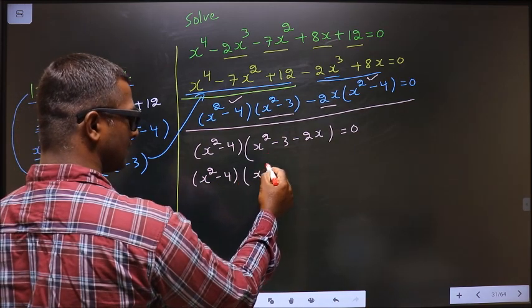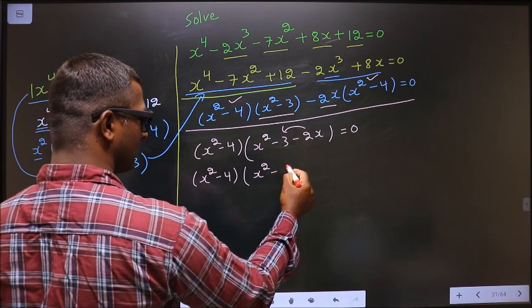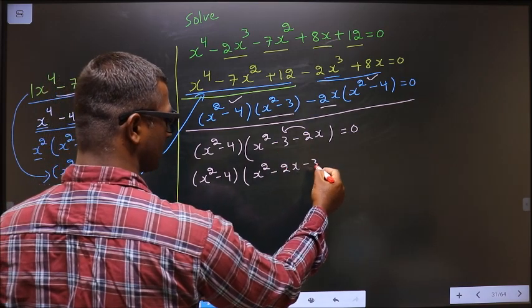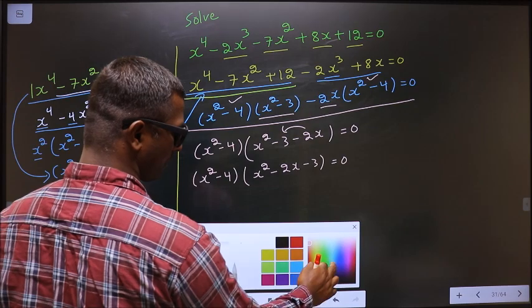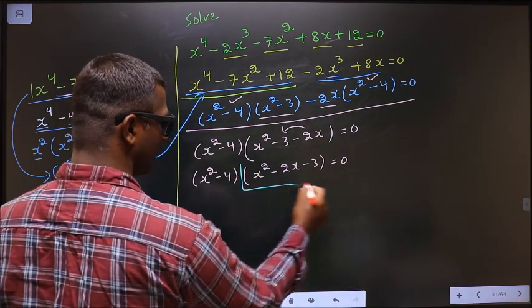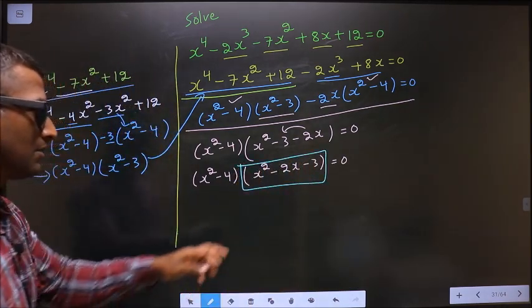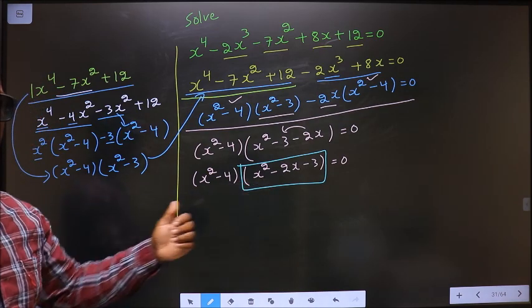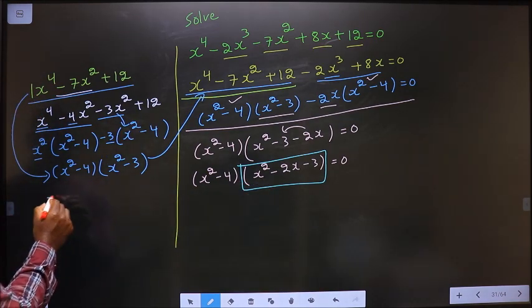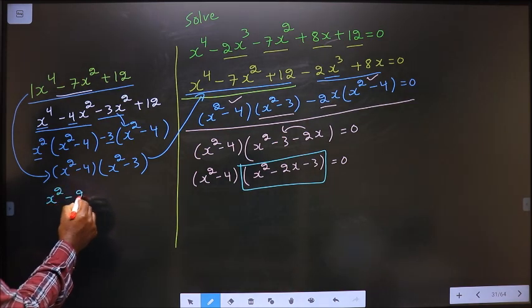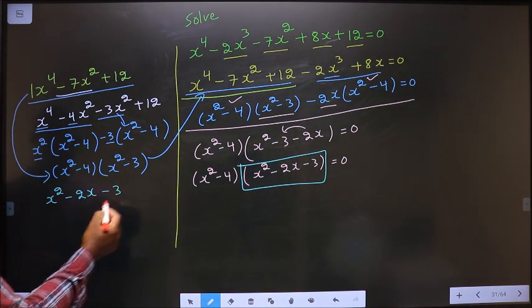Let me rearrange this equation, putting the x term first and then the constant. So the quadratic inside becomes x² - 2x - 3.